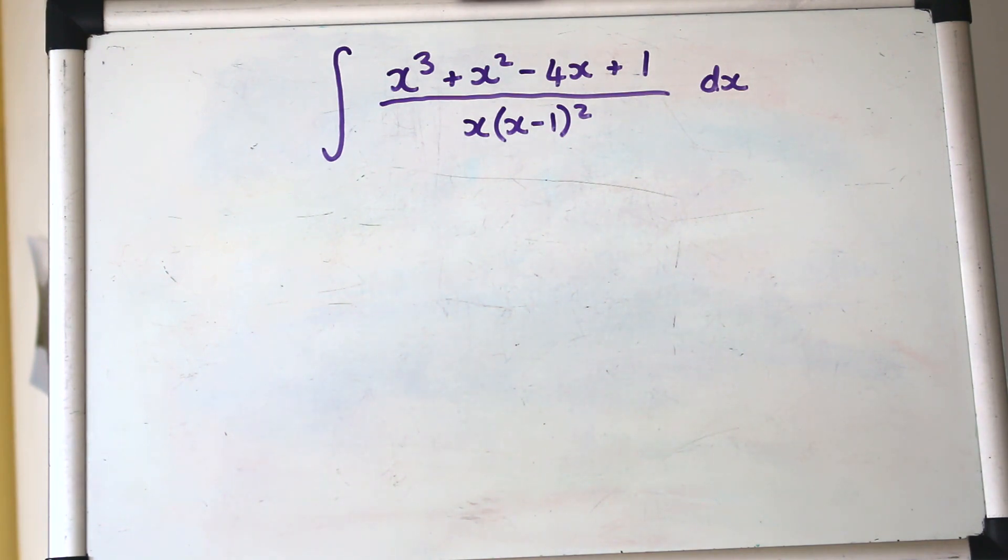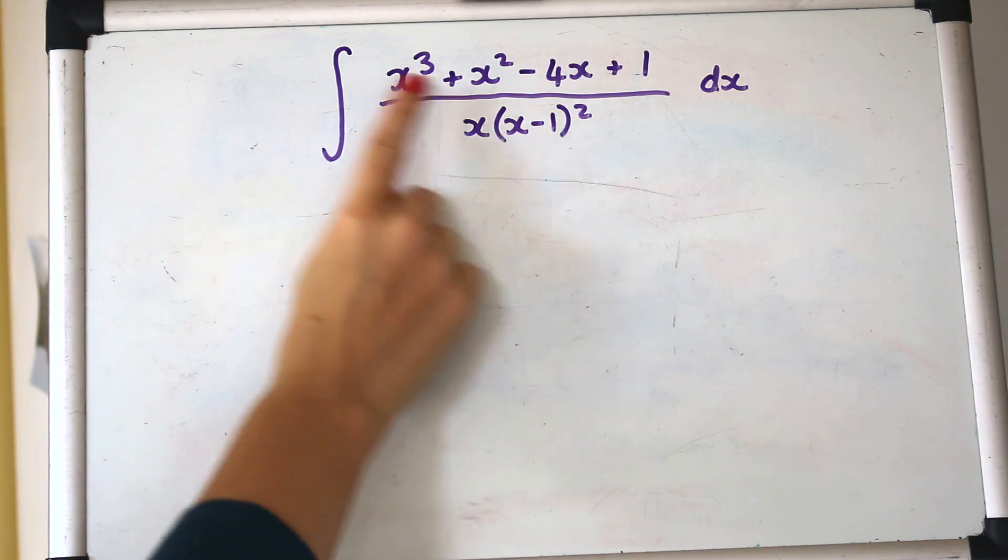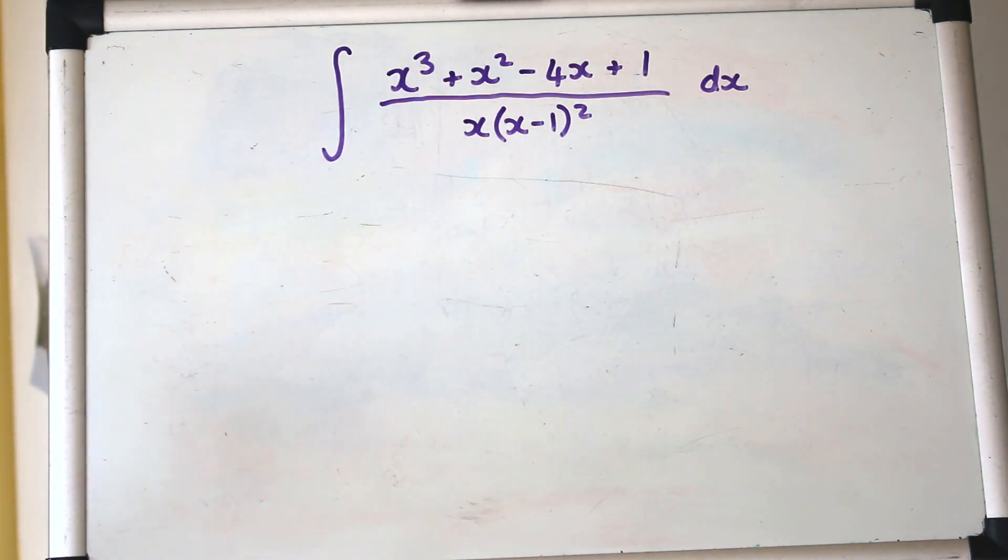So the bottom if you expand that out then the highest power of x would be cubed. Notice that we've got an x cubed on the top so we don't have a smaller numerator than denominator they're the same.